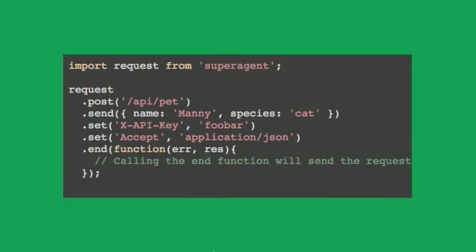This is what Superagent looks like, using ES6 syntax. You do a request, pick the verb, give it a URL, and you can send it some form data using send. You can set some headers. And then when you call end, it actually does the request and fires off the callback, giving you the results.